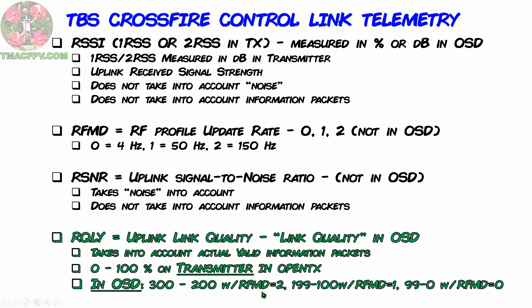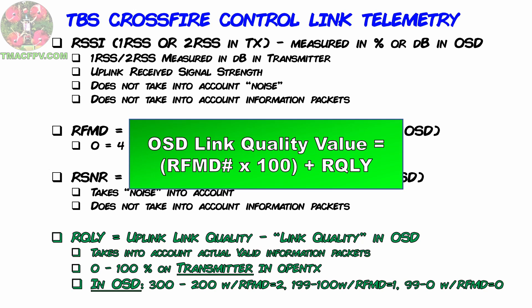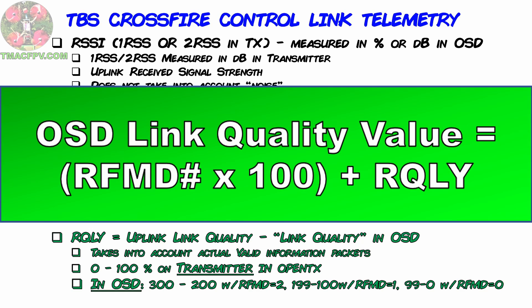If you're in RFMD2, your OSD value will range from 200 to 300. If your signal becomes weaker while in normal operating mode, Crossfire will automatically drop into RFMD1 update rate profile, switching from 150 Hz to 50 Hz but giving you more range to work with. When using RFMD1, your RQLY on your OSD will range from 100 to 199. The same sort of thing could occur for RFMD0 with a range of 0 to 99 in your OSD. Keep in mind your OSD link quality value may be displaying around 300 and all of a sudden jump down to 199 — this isn't a bad thing, it just means Crossfire has changed update rate profiles to a lower update rate. According to the Crossfire manual, you should become concerned when your RQLY value in your transmitter is at 70% and it's critical at 60%.